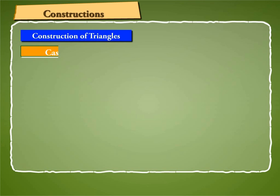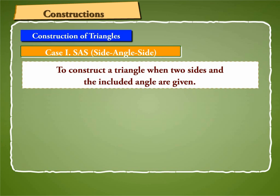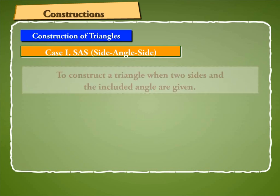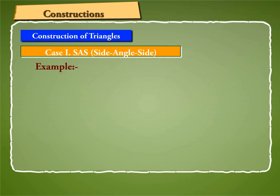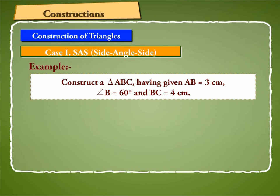Case 1: SAS Side-Angle-Side Triangle Construction. To construct a triangle when two sides and the included angle are given. Let us understand this by taking an example. Let us construct a triangle ABC in which AB is equal to 3 cm, angle B is equal to 60 degrees, and BC is equal to 4 cm.